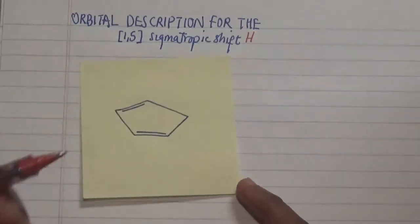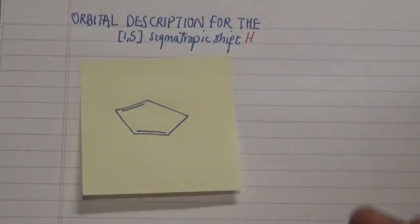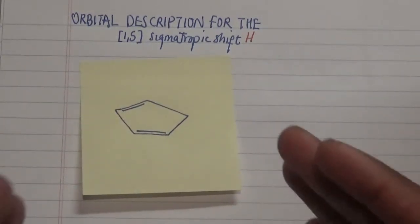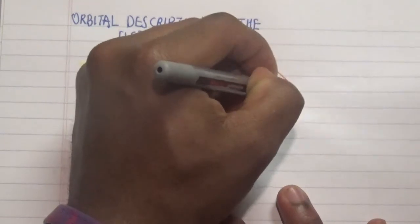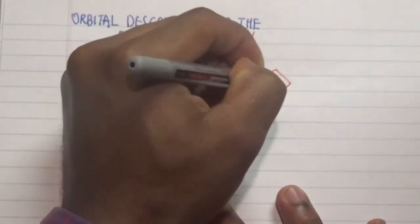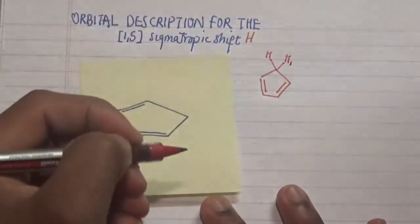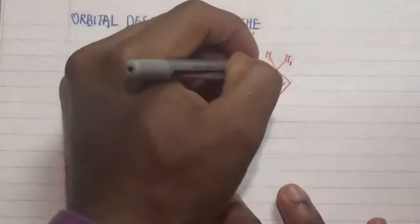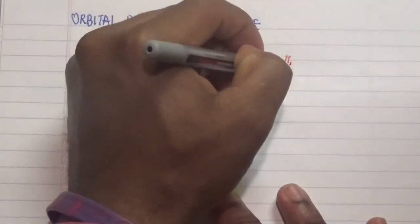So let's number this in terms of how we can actually approach this particular question mechanism-wise. If we look at the mechanism, we have this particular structure and then we have our two hydrogens here which are on this saturated carbon.